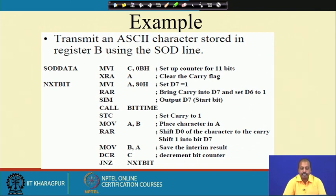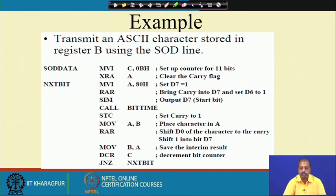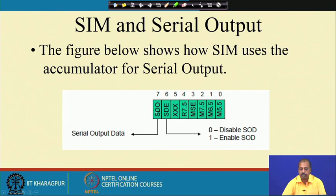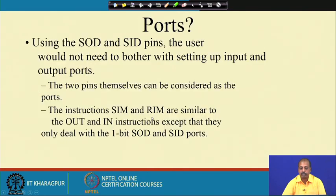The next instruction XRA A performs XOR of the accumulator with itself, making its content 0 and clearing the carry flag. Then we move the pattern 80 hex to the A register, which sets bit D7 to 1, and then rotate right — bringing the carry into D7 so D6 becomes 1. Then we execute the SIM instruction, which outputs the start bit. The start bit is 0 and the SDE enable line is 1; this is achieved by the RAR rotate accumulator right, which brings the carry bit into D7 and shifts D7 to D6, enabling SDE. The SIM instruction then transmits the D7 bit (0) as the start bit.